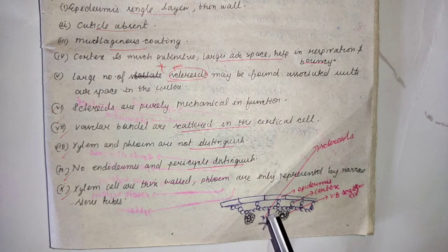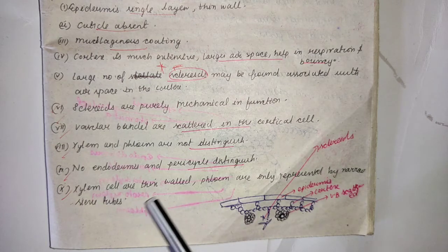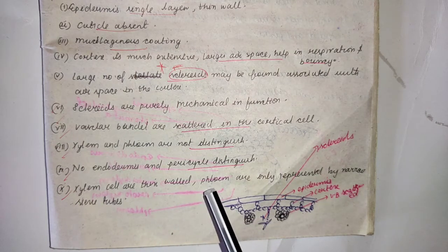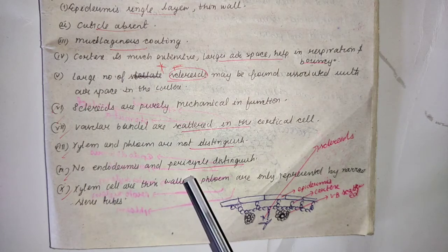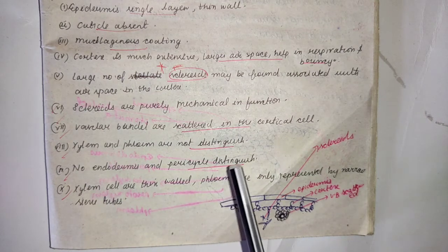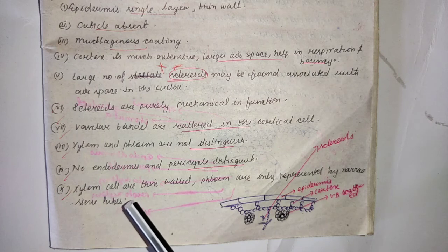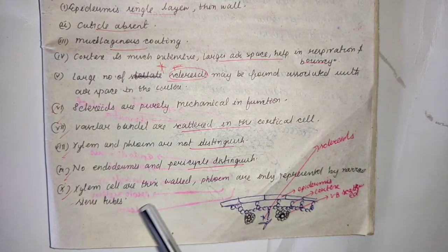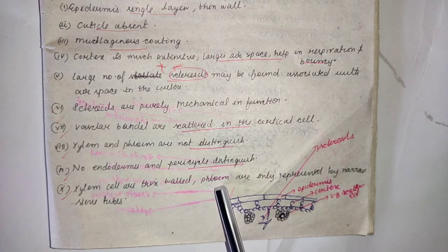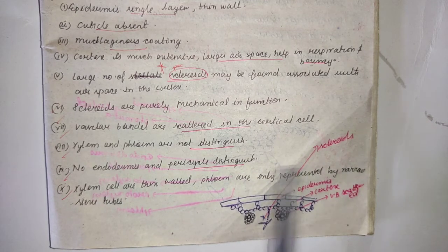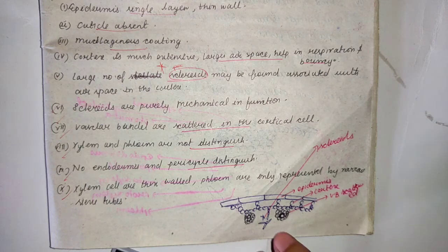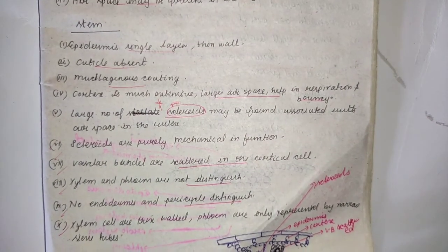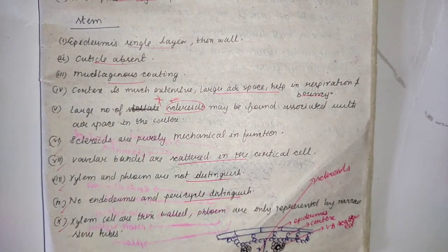Next to the cortex, endodermis and pericycle are present, but in the stem of floating hydrophytes, endodermis and pericycle are not well distinguished. Xylem cells are thin-walled and phloem is represented only by narrow sieve tubes. This is the stem anatomy of floating hydrophytes.